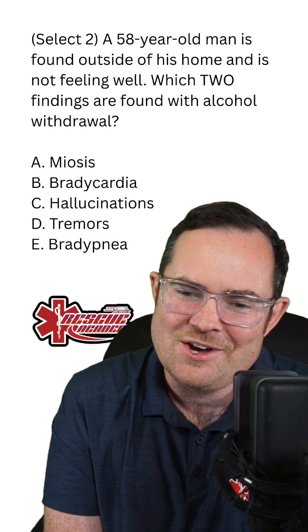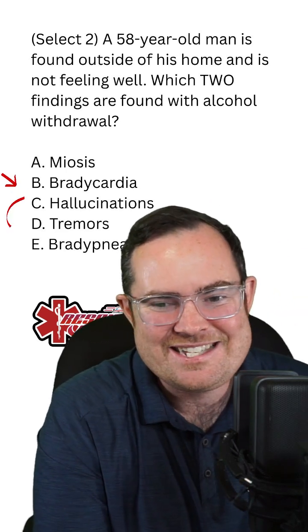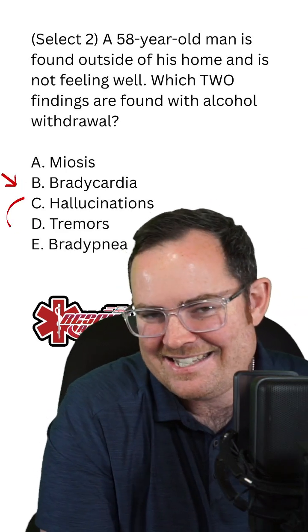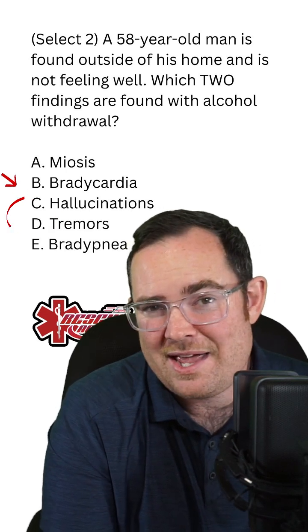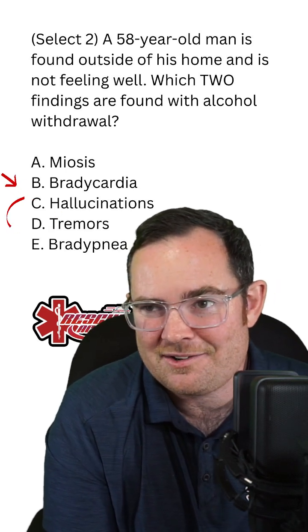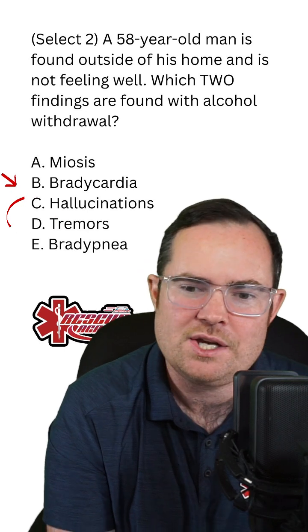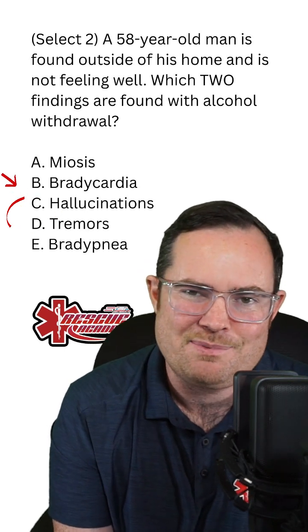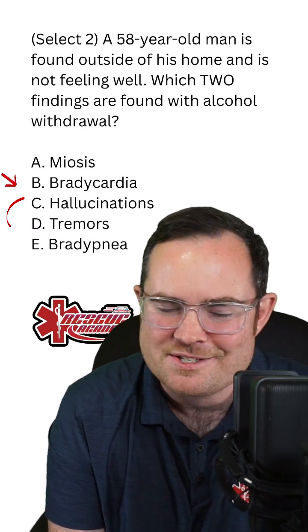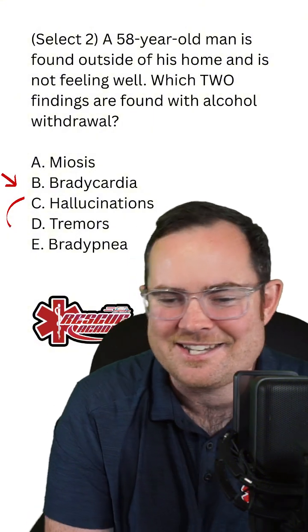So the best answers here would be C and D. With regards to A, meiosis, I'm not necessarily thinking of a pupillary change. And again, bradycardia and bradypnea — I'm seeing the opposites of those. So the best answers here are C and D. I'll see you next time.